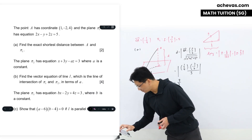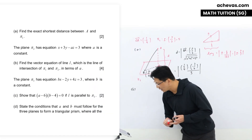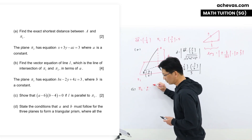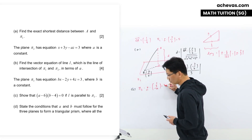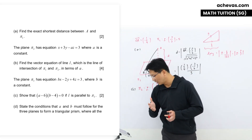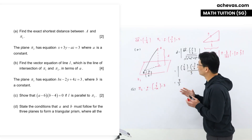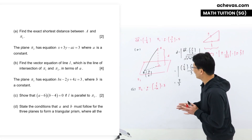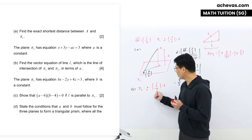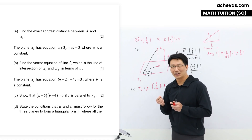Now let's look at part B. We are also given another plane π₂. Let me rewrite it into scalar dot product form: r · (1, 3, -a) = 3. For part B, we are required to find the vector equation of the line of intersection between π₁ and π₂. Usually we could use a calculator for this, but not here because there is an unknown 'a', so we cannot input this into the GC to find the line of intersection.